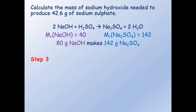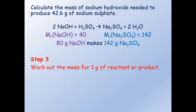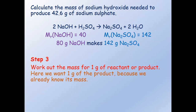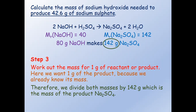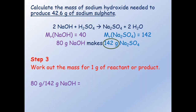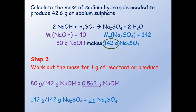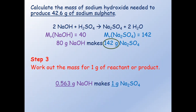Step three: work out the mass for 1 gram of reactant or product. Here we want 1 gram of the product because we already know its mass — the question says produce 42.6 grams of sodium sulfate. Therefore we divide both masses by 142 grams. 80 divided by 142 gives 0.563 grams of sodium hydroxide, and 142 divided by 142 gives 1 gram of sodium sulfate. So 0.563 grams of sodium hydroxide makes 1 gram of sodium sulfate.